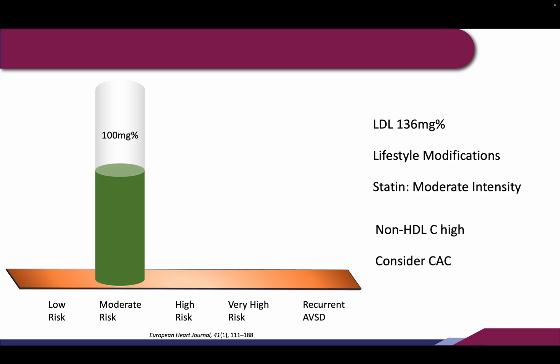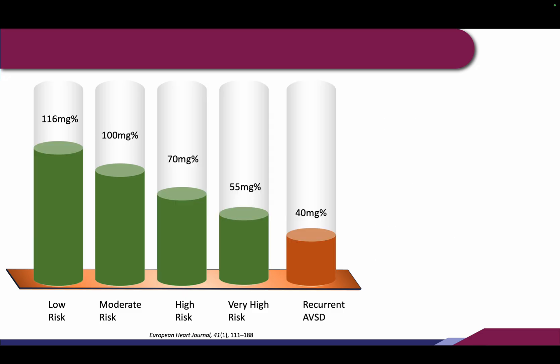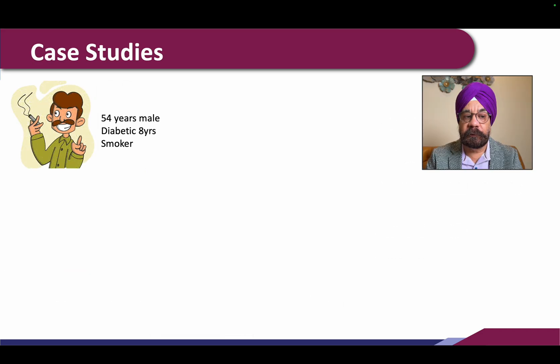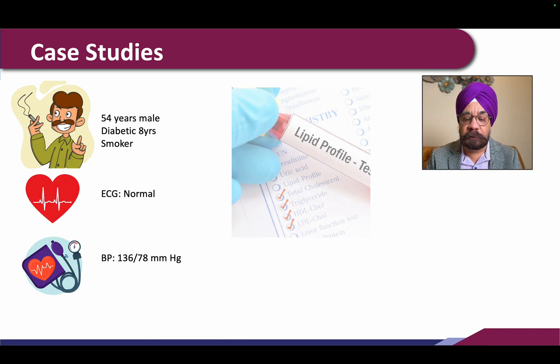Again, in this category it's a good idea to do calcium scoring and Lp(a). If the calcium score is high or Lp(a) is more than 50, we would upgrade this patient to a higher category, where the LDL would need to be reduced by 30 percent further.